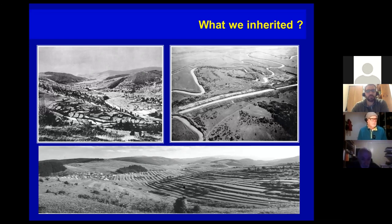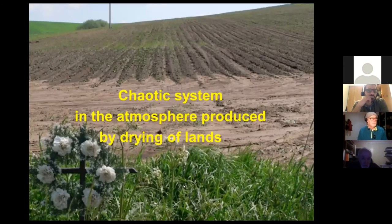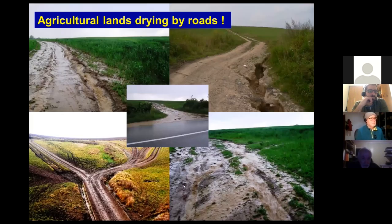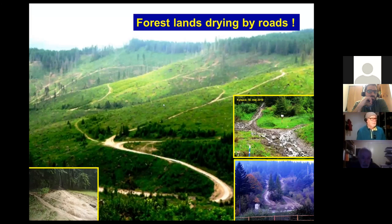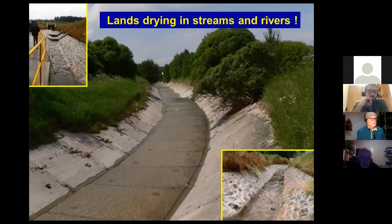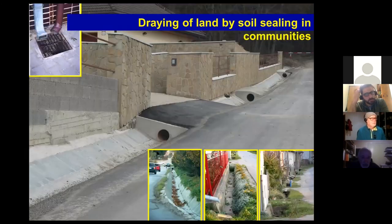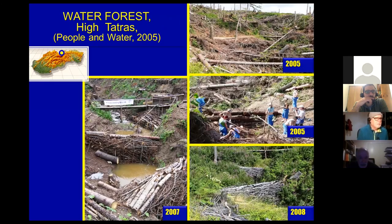Now the second part of the talk: how is it in our countries and what do we do? This is what we inherited — a quite drained landscape, a chaotic system, many roads which drain water, drastic drainage of large fields, roads on slopes of forests acting as canalization of water, and a concrete jungle in cities.